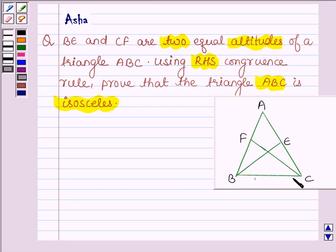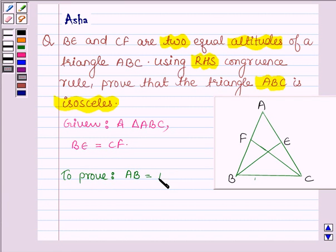Let this be the triangle ABC in which the two altitudes BE and CF are equal. Here we are given a triangle ABC such that the altitudes BE is equal to CF and we have to prove that triangle ABC is isosceles, that is any of its two sides are equal. We shall show that AB is equal to AC.